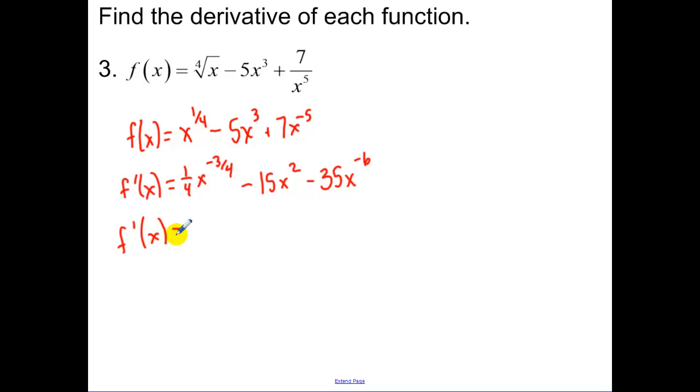Now writing it in a little bit of a simpler form. We would have 1 over 4 times the 4th root of x cubed minus 15x squared minus 35 over x to the 6th.